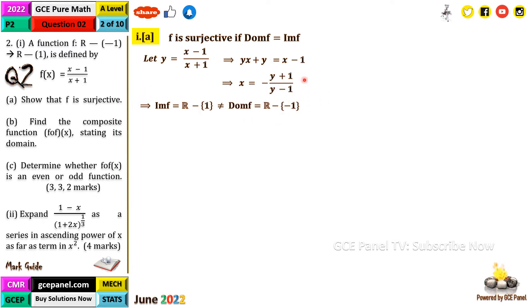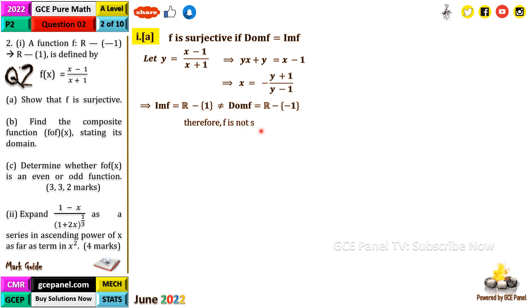The domain of this inverse function is the set of all real numbers excluding one. So the image (range) equals the set of all real numbers excluding one, which is not equal to the domain — the set of all real numbers excluding negative one. Therefore, f is NOT surjective. That's worth three marks.